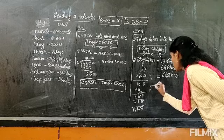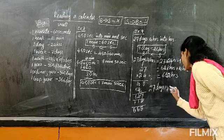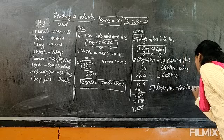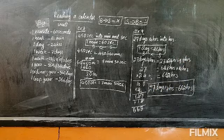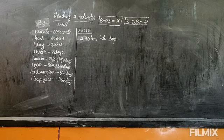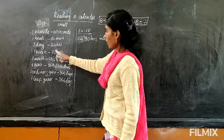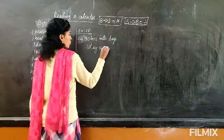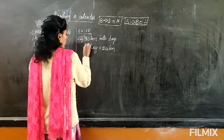So let's finish the answer sentence. Now the last exercise: 490 hours into days. So we are converting hours into days. The formula is 1 day equals 24 hours.